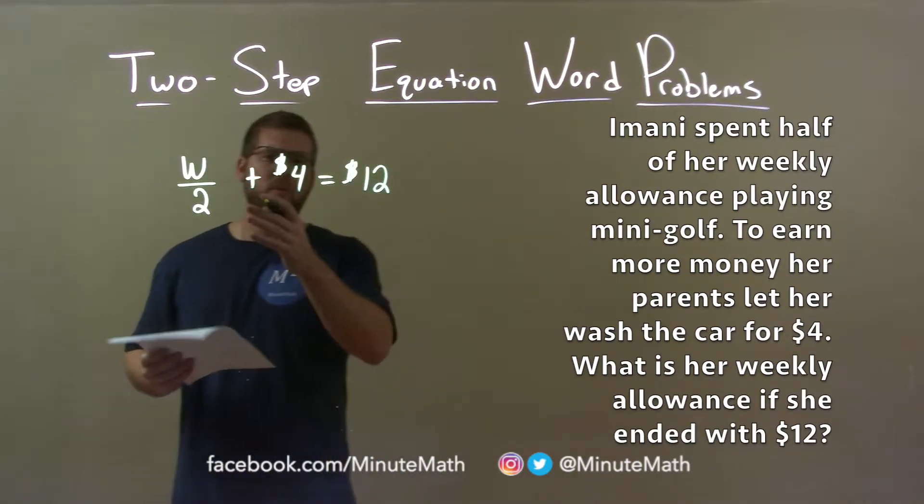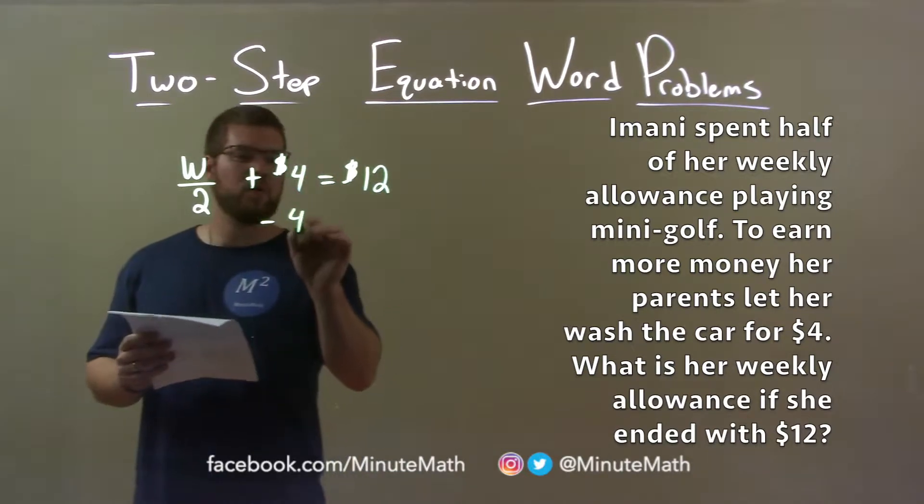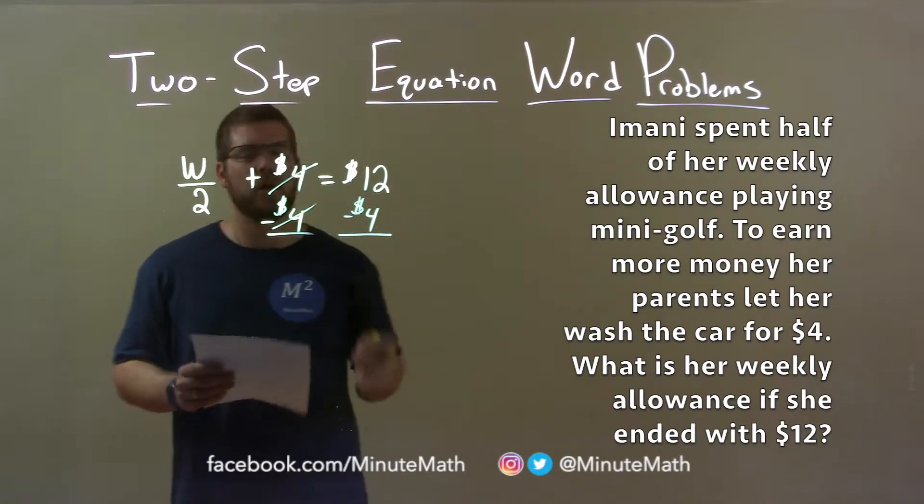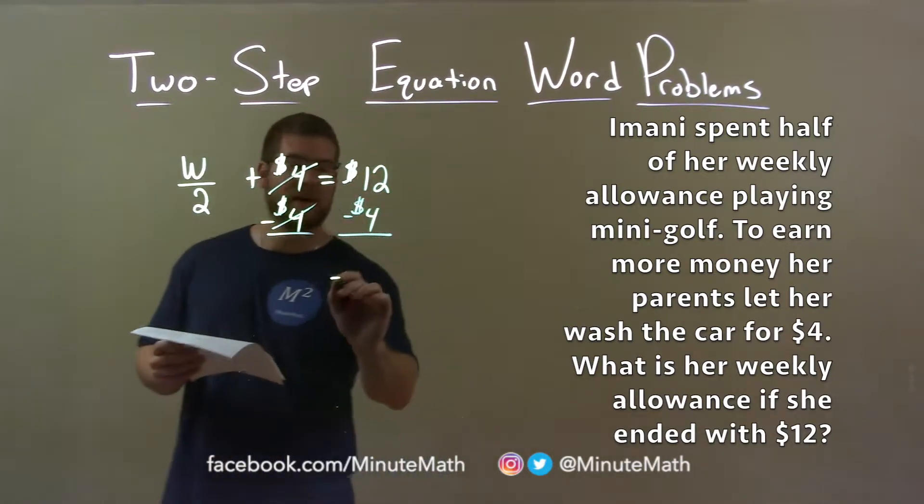All right. Well, we want to solve for W. So if I subtract four from both sides, that would be my first step. The fours cancel here and twelve dollars minus four dollars is eight dollars.